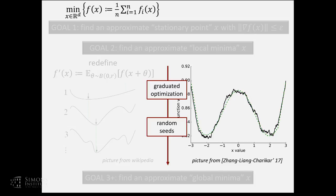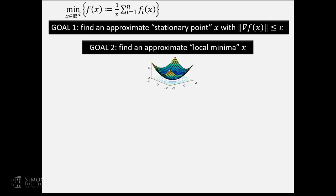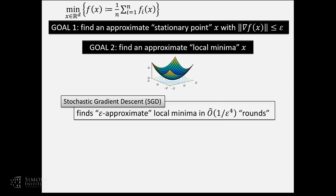Even if you're interested in this more ambitious goal of finding global minima, this talk can be relevant. The talk is about achieving goal number two — finding local minima. Looking at prior works, pretty much the only online result is stochastic gradient descent, which also happens to be what everyone uses in training neural networks.